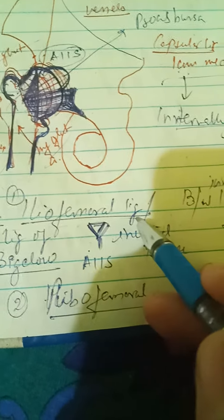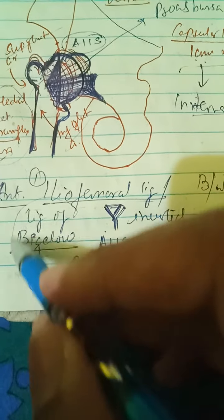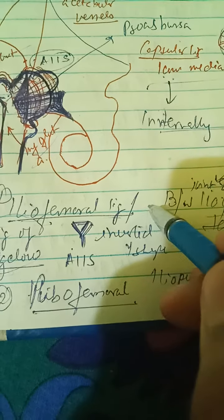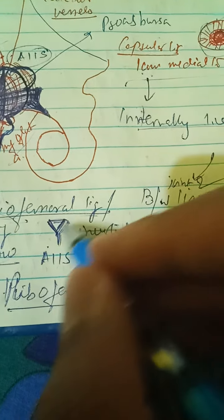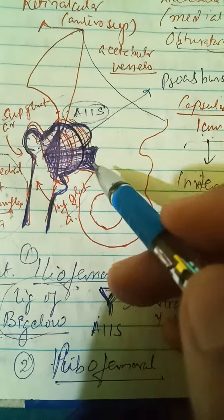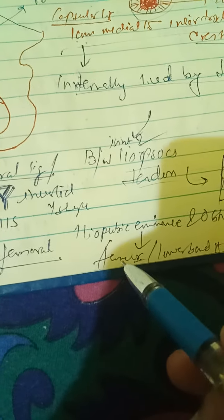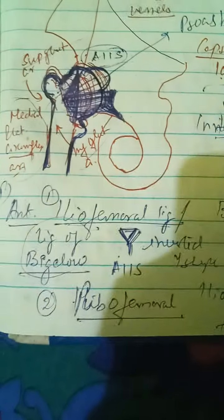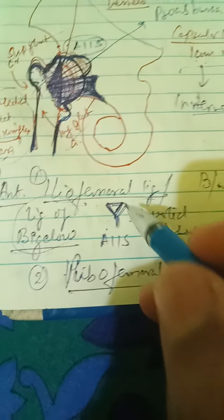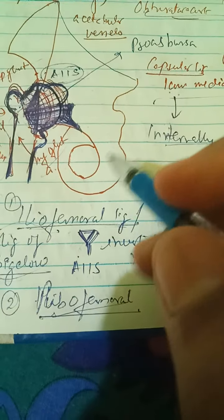Anteriorly there is the iliofemoral ligament, also known as the ligament of Bigelow. It is the strongest ligament of the hip joint. It is an inverted Y-shaped ligament attached from the anterior inferior iliac spine, and its two bands are both attached to the intertrochanteric line.